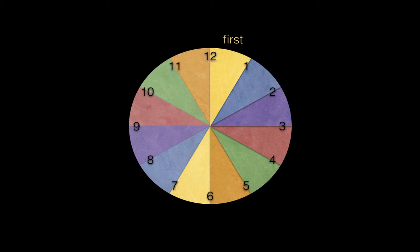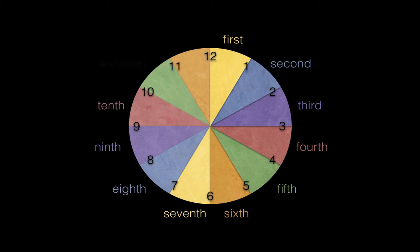So, here's a clock. We've got 12 hours, and if we start by looking at 12, where's the first hour moving forward? Well, it's here from 12 to 1. From 1 to 2 is the second hour, the third hour is from 2 to 3, the fourth is from 3 to 4, and so on.